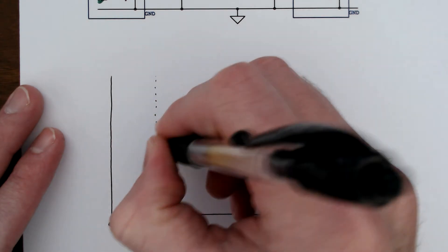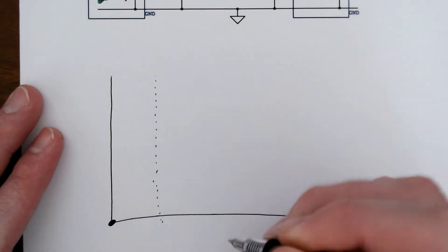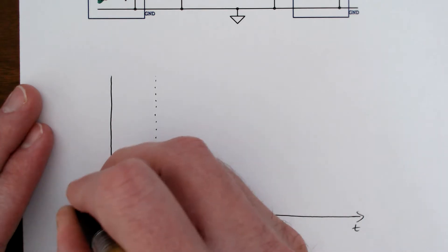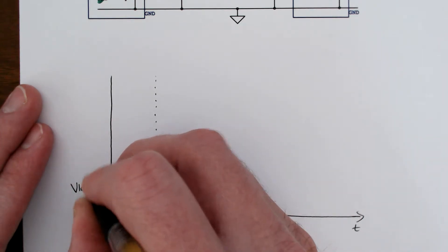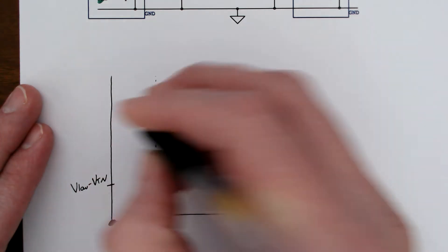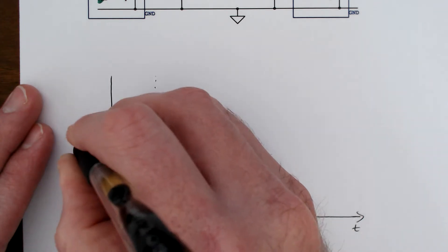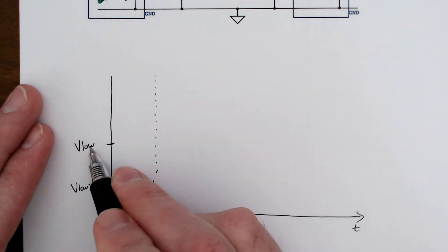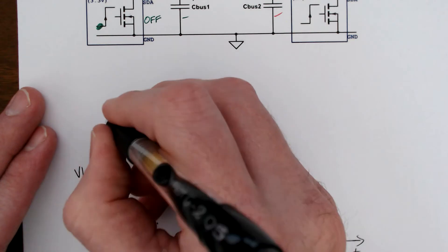I'll draw a line here, just for fun. So we have V high, V low, and V low minus the threshold. Here's V low, which is 3.3 volts.